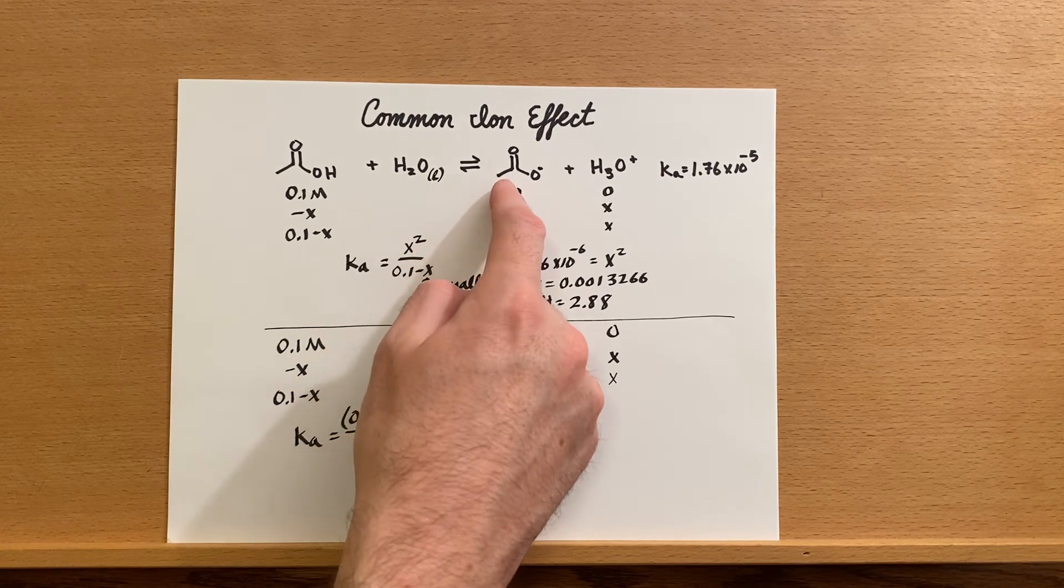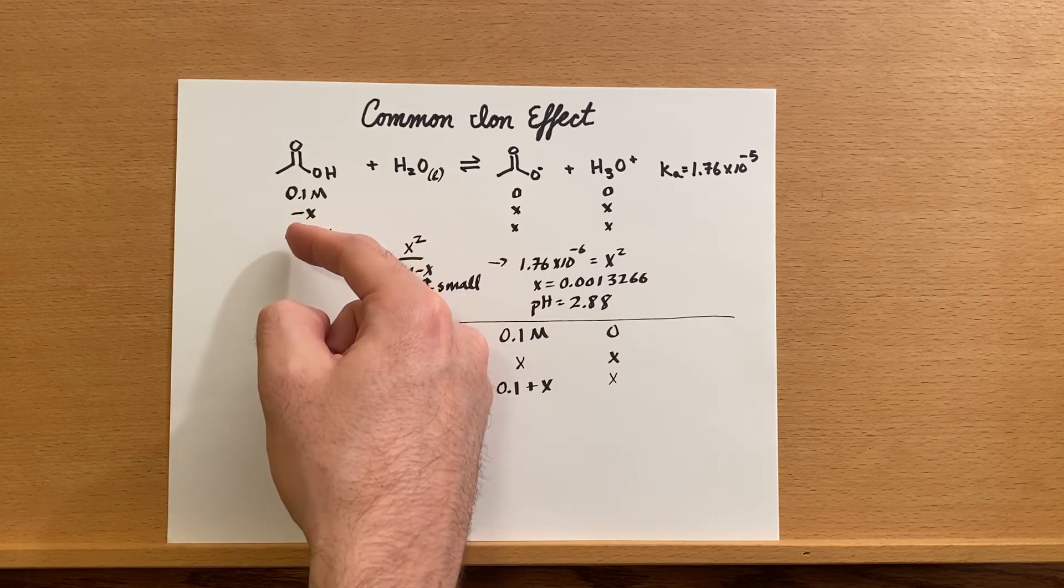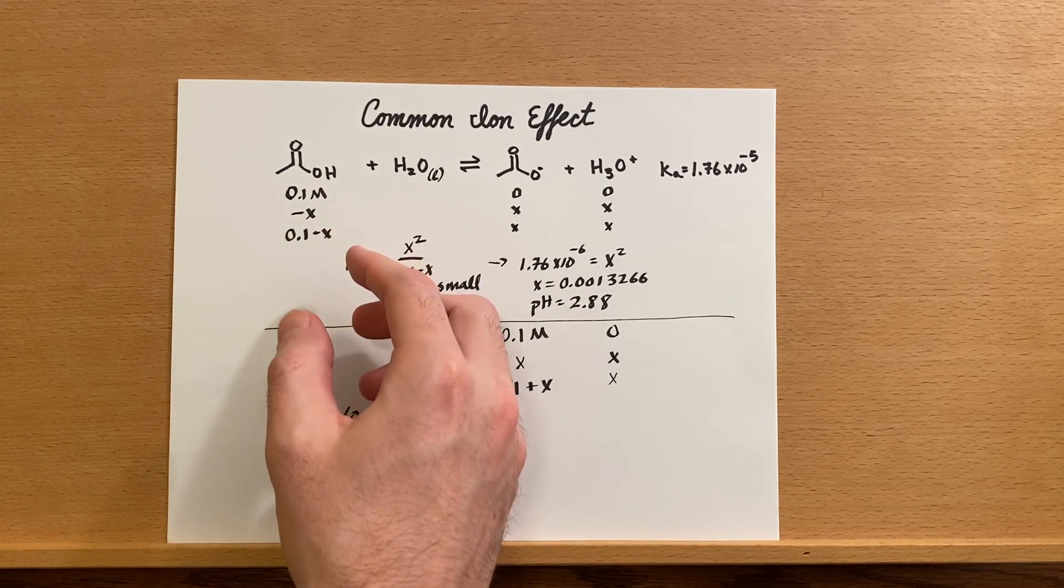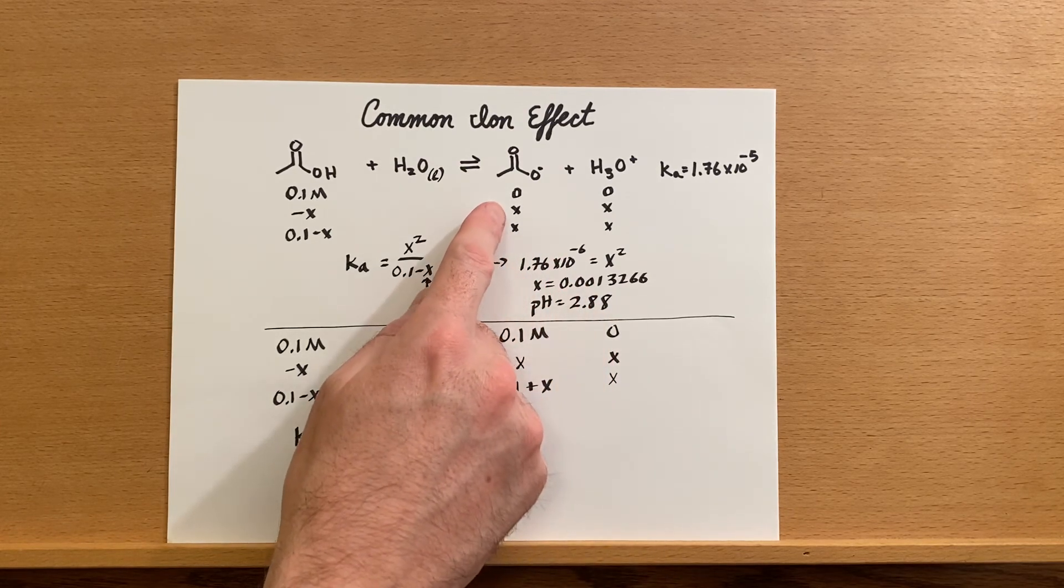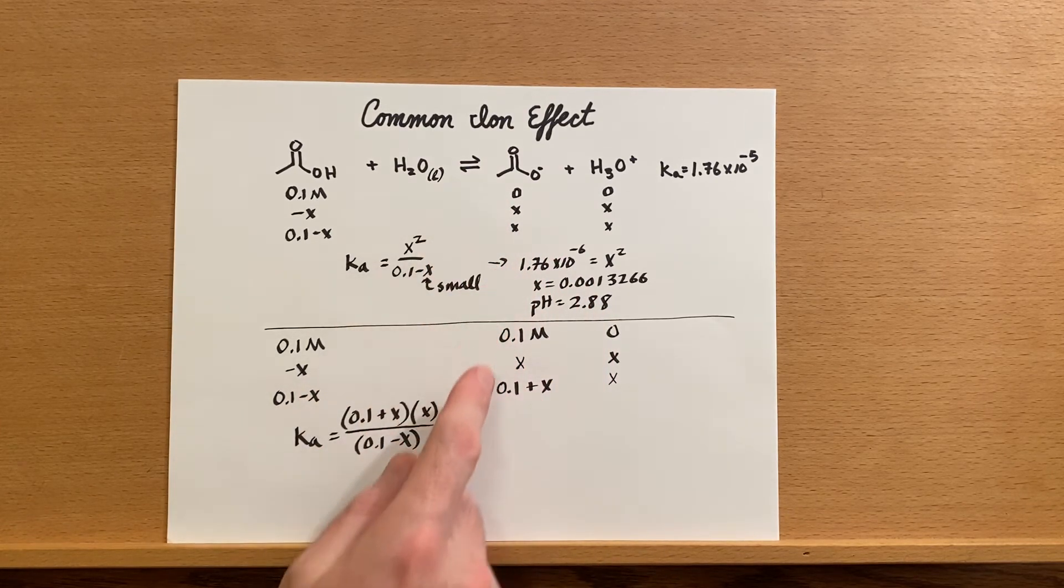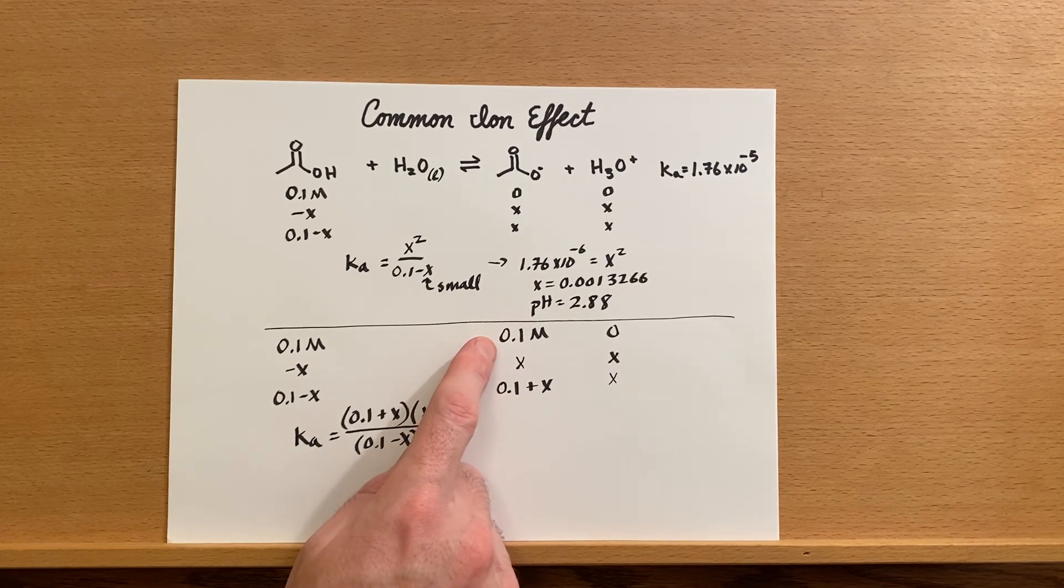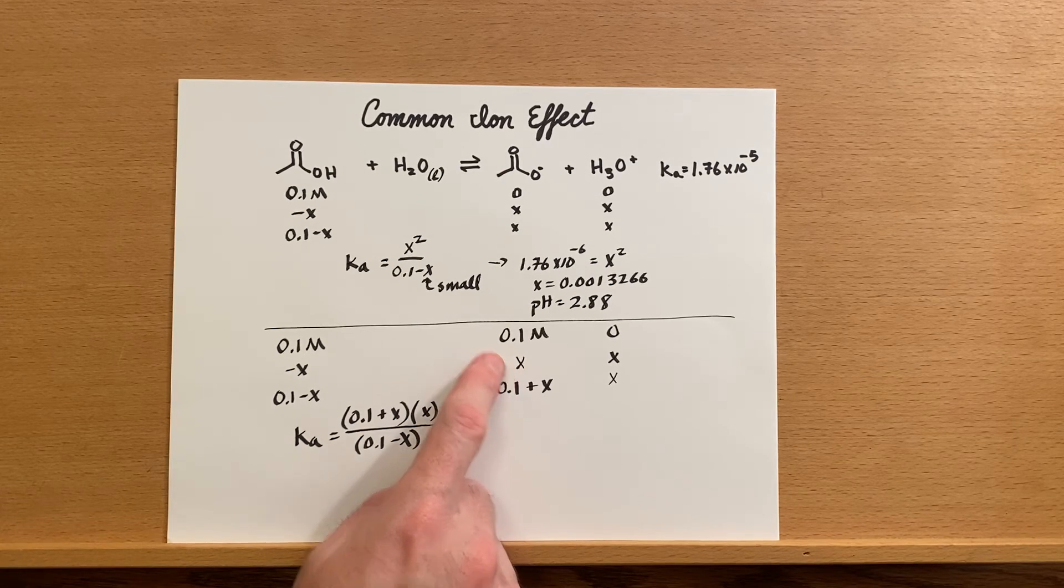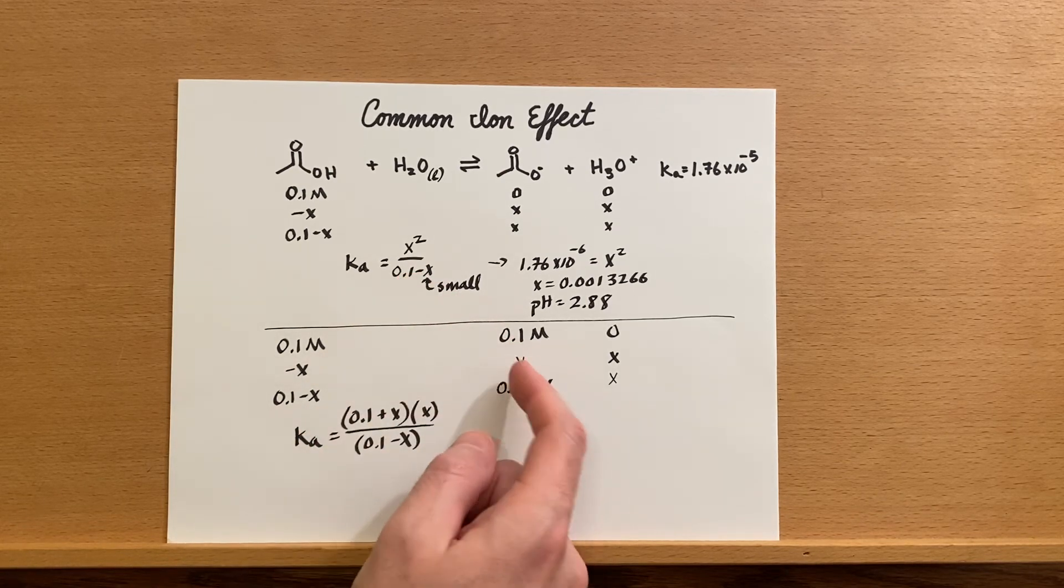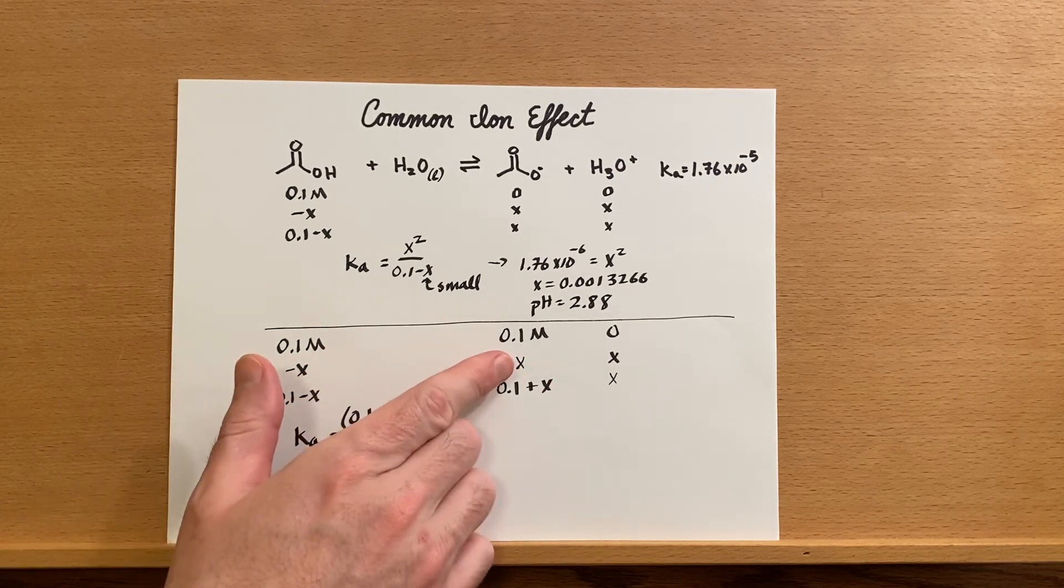But now what happens if I were to add some of this into the solution? Well, Le Chatelier's principle would say that this equilibrium would shift back towards the reactants. So if that's the case, we should expect that down here, since I've added in some product, this X is going to be even smaller than the one we calculated up here because it won't be able to make as much of it.